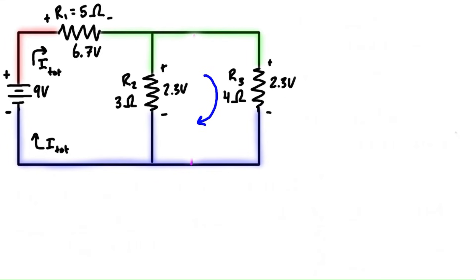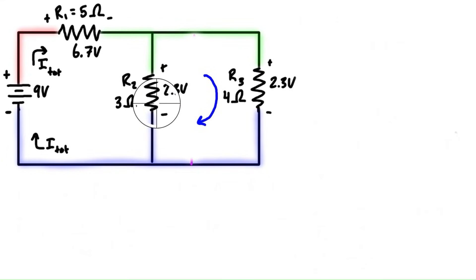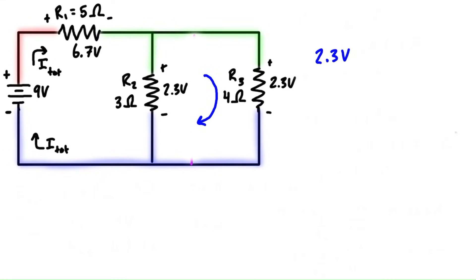Starting at a point on the green node and going around the full loop: when we enter an element's positive terminal, we add that voltage as a positive; when we enter an element's negative terminal, we add that as a negative, and we sum them all to 0. Looking at resistor 3, we have positive 2.3 volts, then we subtract 2.3 volts for resistor 2. So we have 2.3 minus 2.3 equals 0, and this right-hand loop satisfies Kirchhoff's voltage law.